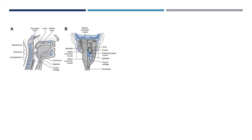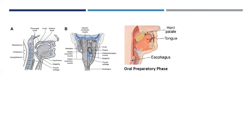Swallowing is incredibly complicated, and we don't really think about it until it changes and becomes difficult. It involves over 30 pairs of muscles and nerves that have to be working perfectly — both in strength and timing — in order to move food and liquid from our lips down into our stomachs. It's a lot more involved and needs to be carefully analyzed and managed.